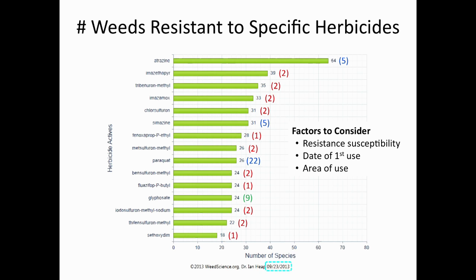This slide shows the number of weeds resistant to specific herbicides. At the top is a triazine—atrazine—which has been around the longest. If you consider three things—which herbicides are most susceptible to resistance, which have been around longest, and which have the widest use—you can account for everything here. The high-risk herbicides, Group 1s and 2s, account for most of the resistant weeds. The ones around longest—paraquat, simazine, atrazine—account for others.